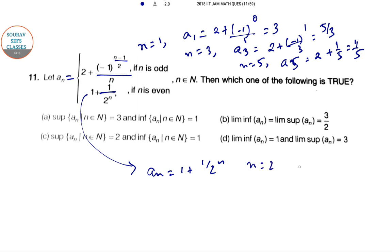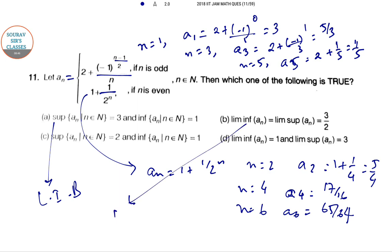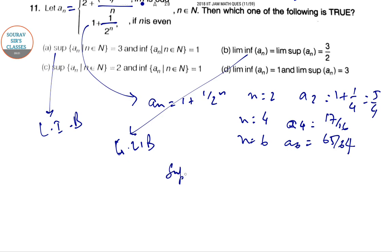a_n, n is even: 1 plus 1/2 to the power n. n equal to 2, a_2 equal to 1 plus 1/2 square is 5/4. n equal to 4, a_4 is 17/16. n equal to 6, a_6 is 65/64. And we know that supremum of a set is its least upper bound, and infimum is the greatest lower bound. So the supremum or infimum of a set is unique if it exists. Moreover, if both exist, then suprema is greater than or equal to infima.